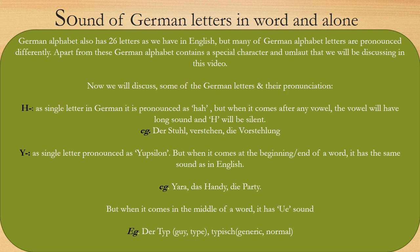The letter H: as a single letter in German, it is pronounced as 'Ha'. But when it comes after any vowel, the vowel will have a long sound and H will be silent. For example: Stuhl, Stein, or Stellung. In every word, H is silent and the vowel that comes before H has a long sound: Stuhl, Stein, Stellung.